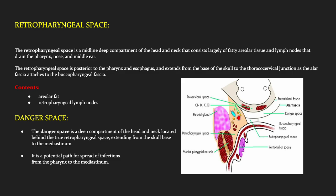The retropharyngeal space is a midline deep compartment of the head and neck and contains largely fatty areolar tissue and lymph nodes that drain the pharynx, nose and middle ear. It lies posterior to the pharynx and esophagus and extends from the base of the skull to the thoracocervical junction as the alar fascia attaches to the buccopharyngeal fascia. It contains fatty areolar tissue and retropharyngeal lymph nodes. The danger space is located behind the retropharyngeal space and extends from the skull base to the mediastinum, and is a potential pathway for the spread of infection from the larynx to the mediastinum.